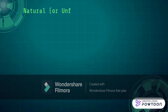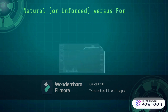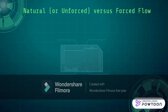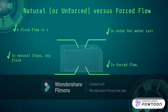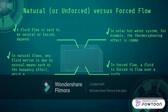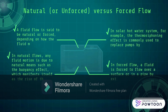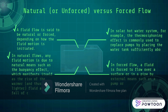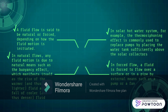Natural, or unforced, versus forced flow. A fluid flow is said to be natural or forced depending on how the fluid motion is initiated. In forced flow, a fluid is forced to flow over a surface or in a pipe by external means such as a pump or a fan. There are different types of devices that help us to move fluid flow.